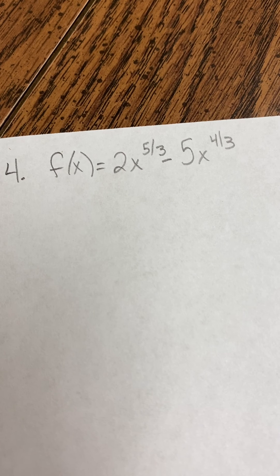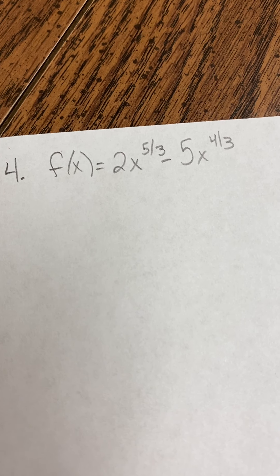For problem number four, our function is f of x equals 2x to the five-thirds minus 5x to the four-thirds.